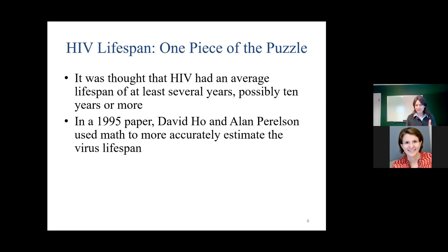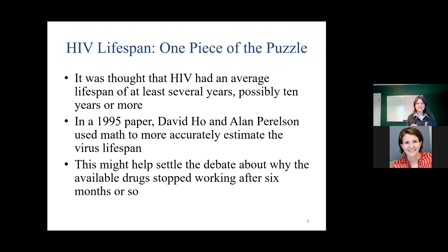David Ho was the clinician treating patients, and Alan Perelson was a math modeler with a biophysics background. They focused on the lifespan because this might help settle the debate about why the drugs we had at the time would stop working after on the order of months. I'm going to leave that as the motivation for the work, and then tie it together after I show you the mathematics — why is the lifespan the missing piece of the puzzle we needed?